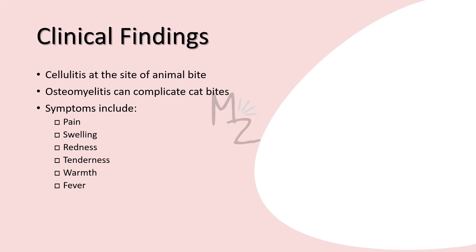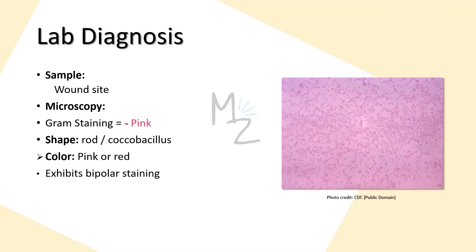Clinical findings: a rapidly spreading cellulitis at the site of an animal bite is indicative of Pasteurella multocida infection. The incubation period is brief, usually less than 24 hours. Osteomyelitis can complicate cat bites because the sharp, pointed teeth can implant the organism under the periosteum. Symptoms include pain, swelling, redness, tenderness, and warmth at the site of infection, and the patient may also feel fever.